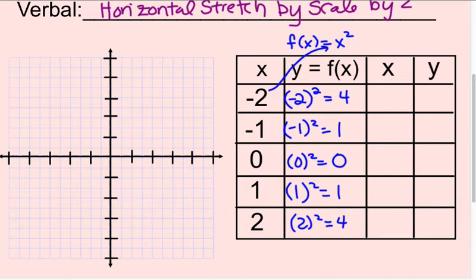Now let's graph it. Left 2, up 4. Left 1, up 1. Over 0, 0, the origin. Right 1, up 1. Right 2, up 4. We've now graphed the parent function for this quadratic function, f(x) equals x squared.